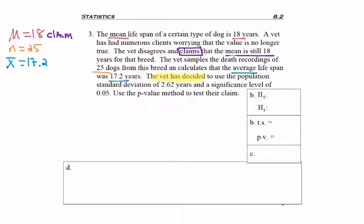The vet has decided to use the population standard deviation of 2.62, so sigma, the population standard deviation. We're told to use a significance level of 0.05, which is alpha.